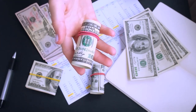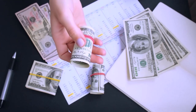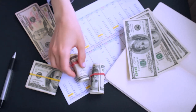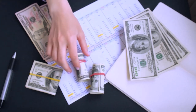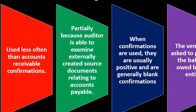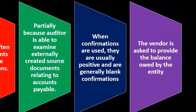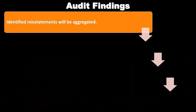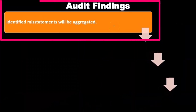All the standard confirmation rules apply here. The auditor handles the confirmation — not on the company's letterhead. We send them directly to the vendors, and the vendors send them directly back to us, the audit firm, not to the company. We keep the company out of it entirely. The vendor is asked to provide the balance owed by the entity.